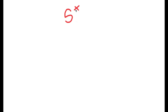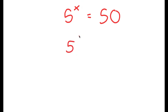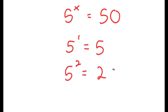In this video, I'm going to be solving the equation 5 to the power of x is equal to 50. To start, let's test different values of x. If x is 1, then I get 5 to the power of 1, which is equal to 5, and this is too low. If x equals 2, I get 5 to the power of 2, which is 25, and this is also too low.